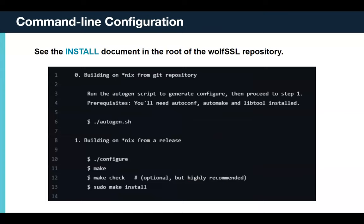If you're using WolfSSL, you'll almost certainly want some sort of additional desktop or command-line app to communicate with your ESP32 device. In the root of the WolfSSL repository there's an install document. Once you have WolfSSL you need to run autogen once, then it's all about configure. There are many options to turn features on and off. You do a make and make check, and optionally install it if you want the WolfSSL library available in a Linux environment.